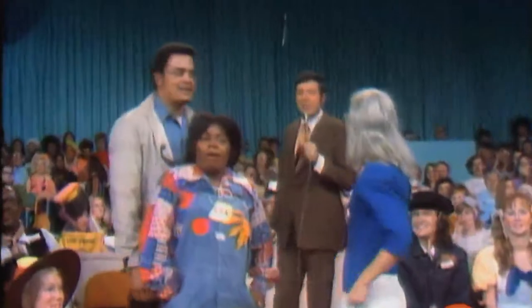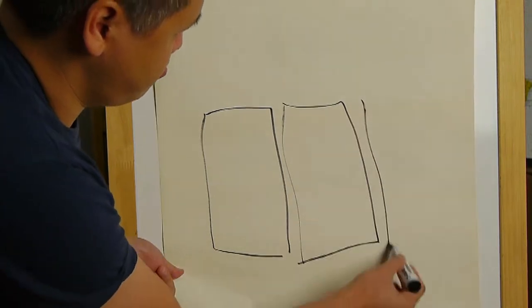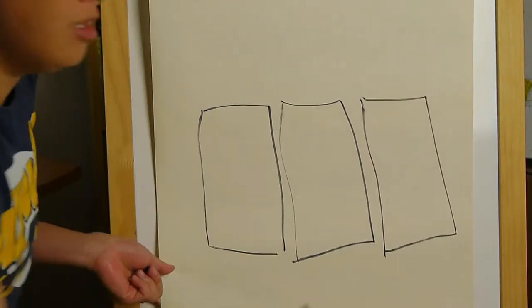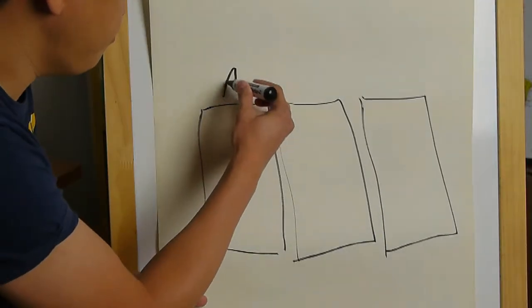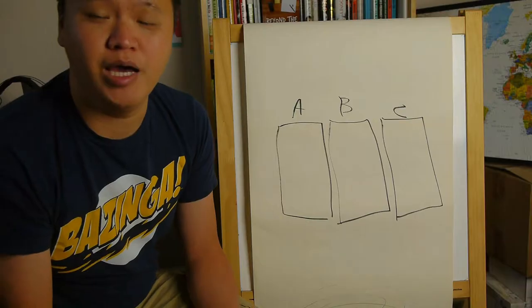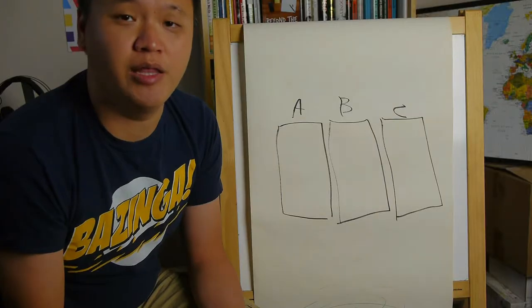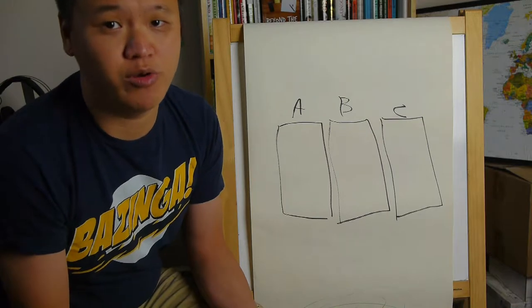So the crux of the Monty Hall problem, which is loosely based on the game show Let's Make a Deal, goes like this. You have three doors. And let's call them A, B and C. Behind two of the doors is a goat. And behind the third door is a car. And obviously the idea is you want to win a car.